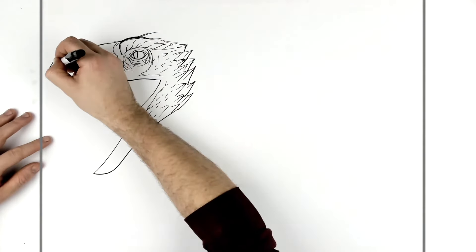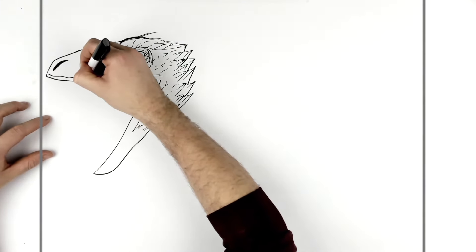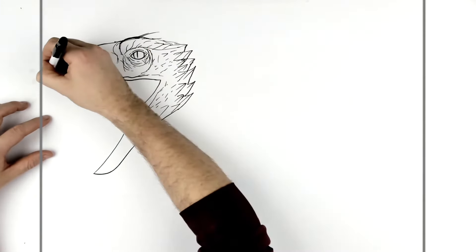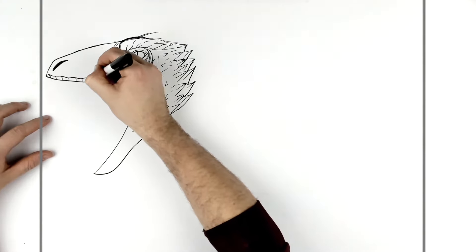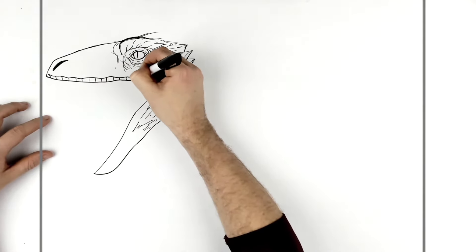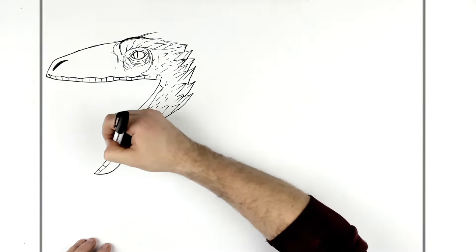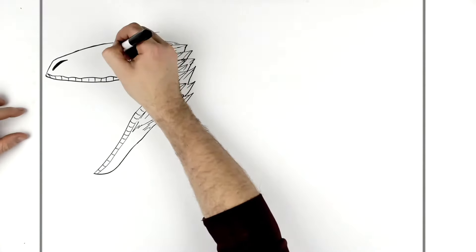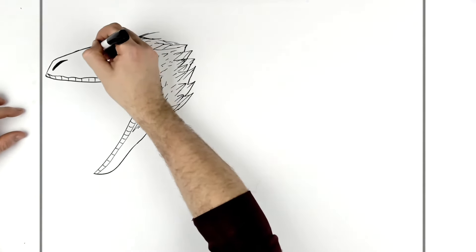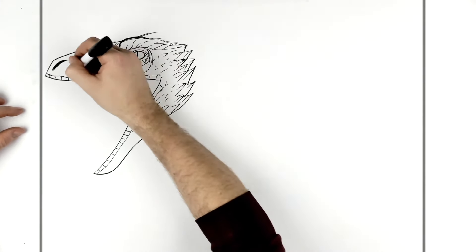Nostril just here. Then the top lip has all these wrinkles that come around here, so these will all have those sort of wrinkle lines on the lip just to show he's kind of reptilian. And then we've got that sort of dip in the bone that Jurassic World normally has - you can put texture and maybe like a scar on this.